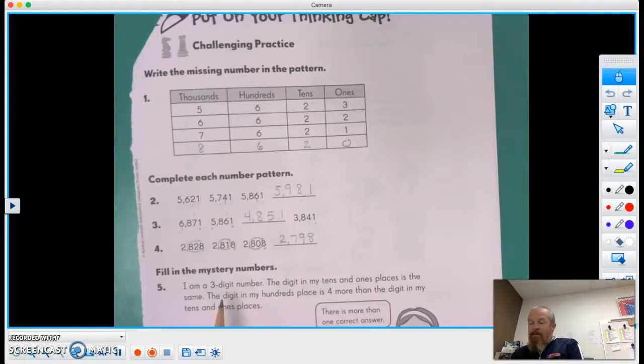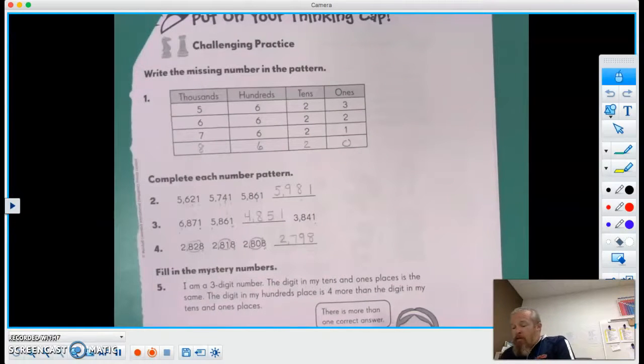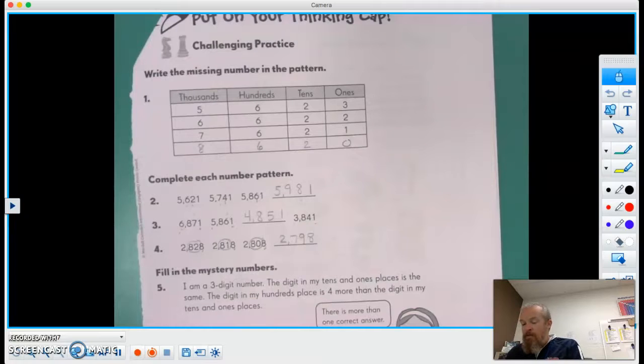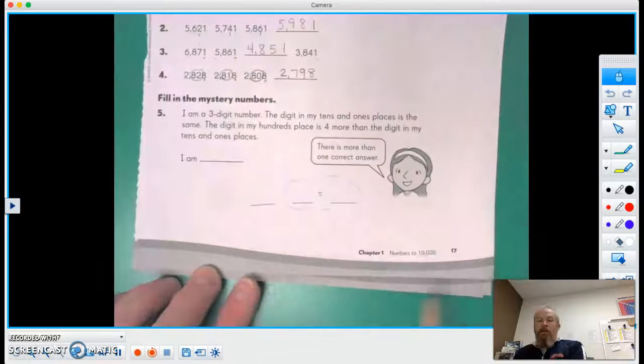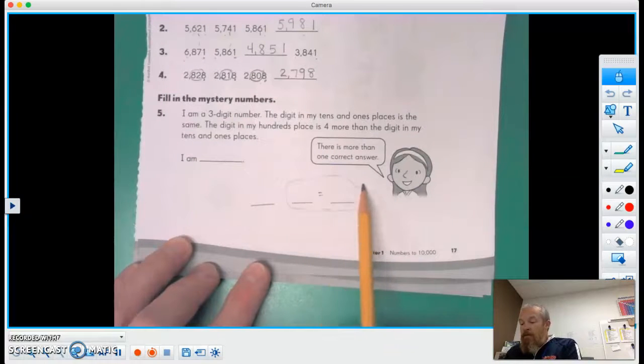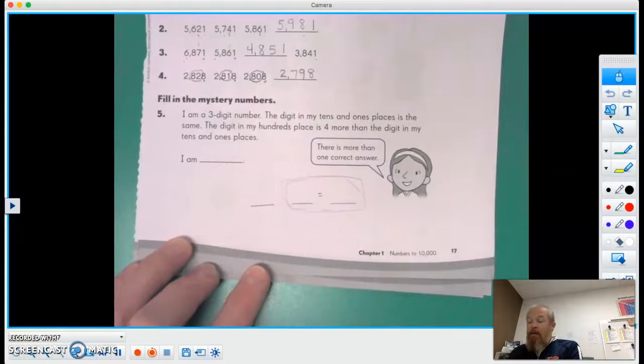All right. I am a three digit number. The digit in my tens and ones place is the same. Okay, so here's my hundreds, my tens, and my ones. These two have to be equal. They're going to be the same exact number.